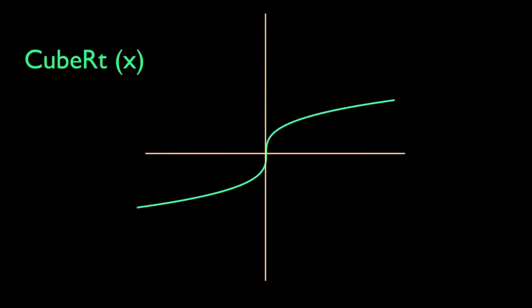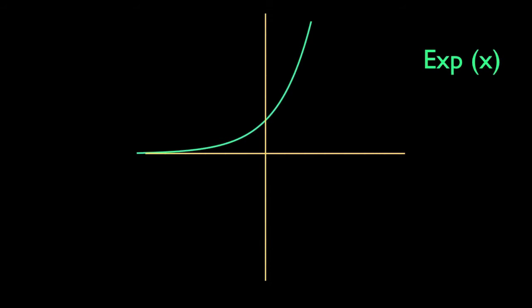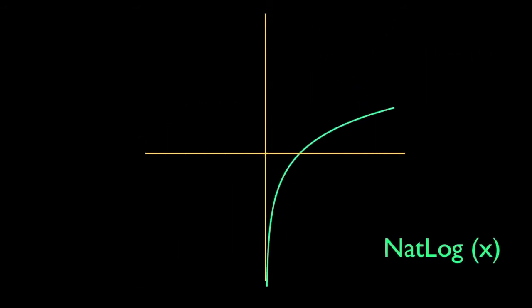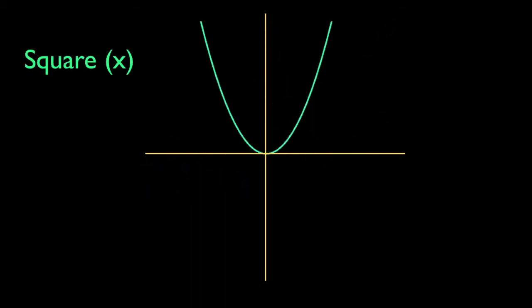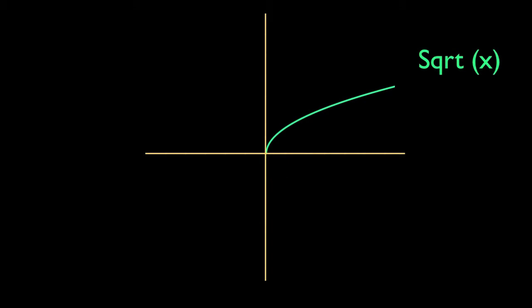There's the v-shaped abs function, the cube function and its inverse, the cube root function, the exponential function and its inverse reflected across the id function, the natural log function, the reciprocal function, which is its own inverse, the square function and its partial inverse, the square root function.